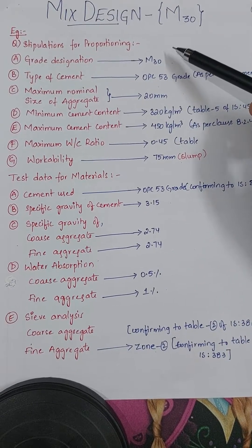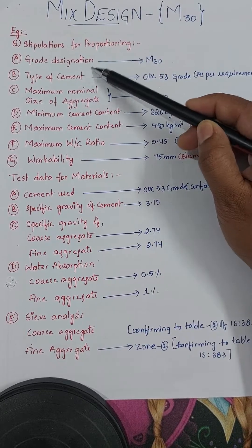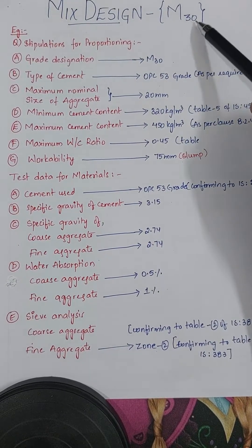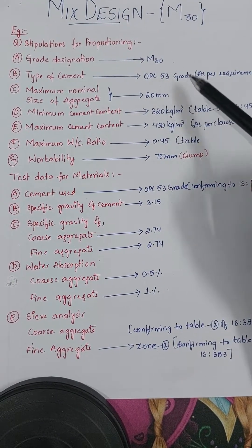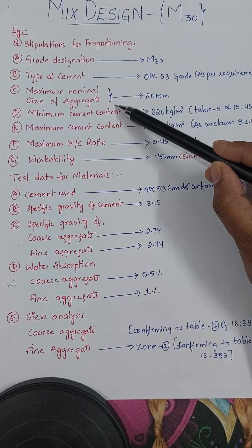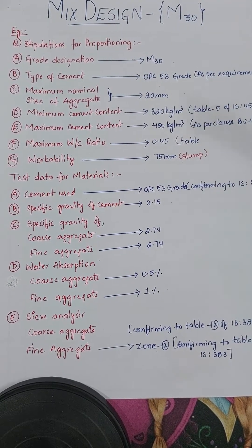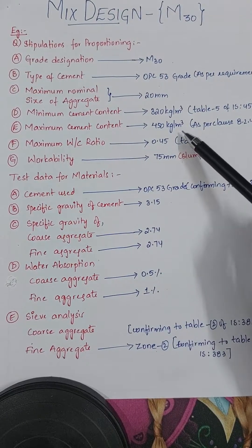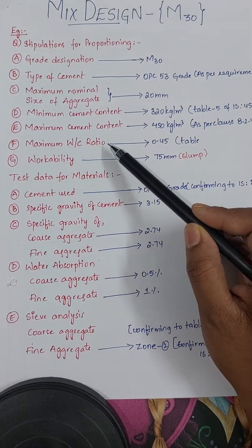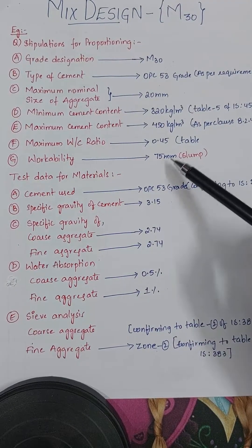Here you can see an example question with the specifications given for the various materials. Grade designation is M30, the type of cement is OPC 53 grade, maximum nominal size of aggregate is 20 mm, minimum cement content is 320 kg per meter cube as per table 5 of IS 456, maximum cement content is 450 kg per meter cube, and maximum water cement ratio is 0.45 with workability given as 75 mm slump.